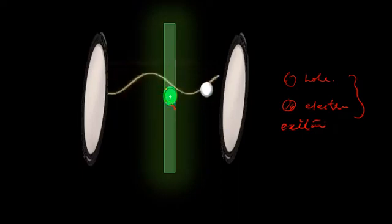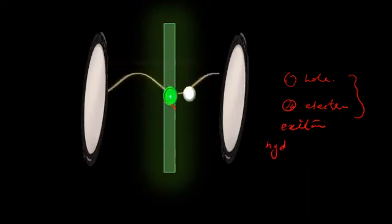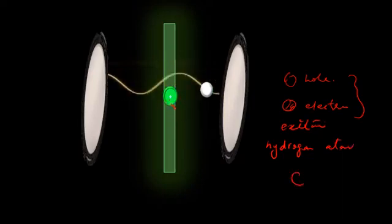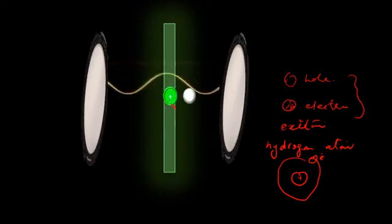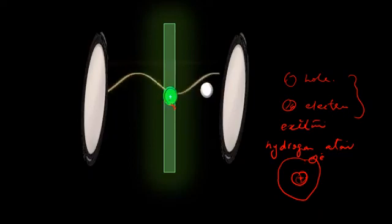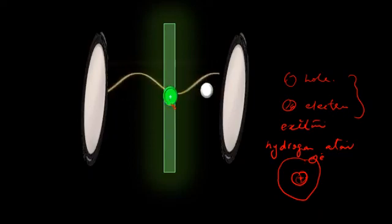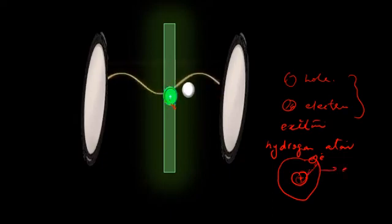You can understand the exciton by considering the example of a hydrogen atom. In a hydrogen atom, there is a positively charged nucleus with only one proton, and a negatively charged electron revolving around it. If we consider the positively charged proton as a hole and the negatively charged electron revolving around it, then this hole and electron pair forms the exciton.